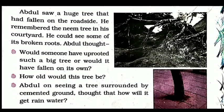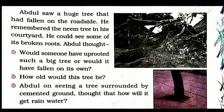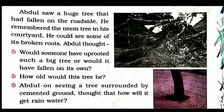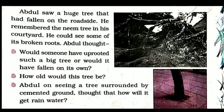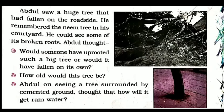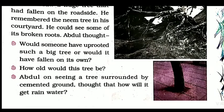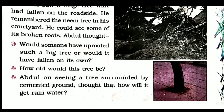Abdul, on seeing a tree surrounded by cemented ground, thought: how will it get rainwater? You can see in the picture that Abdul has seen a tree which is cemented from four sides. So he is thinking, how will this plant get water?